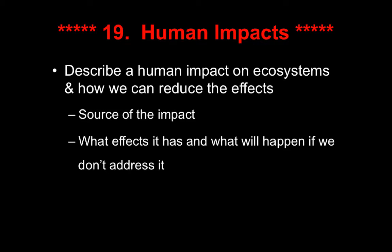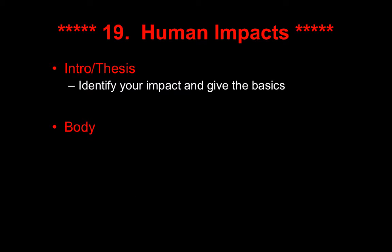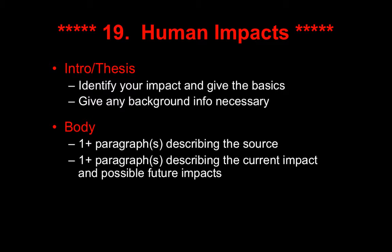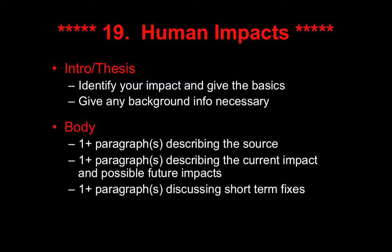How is it going to get worse if we don't do something about it, and then what are some of the steps we can take to actually reduce the impact that it's having? Identify and give the basics, and then depending on what you choose, you may have to give some background information. You need a paragraph or so describing the source, and another couple of paragraphs describing its current impact and possible future impacts.